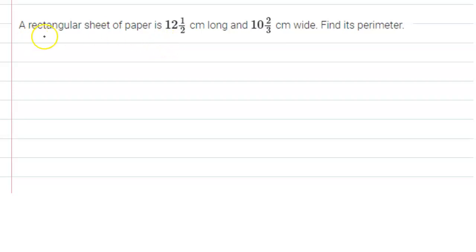Hello everyone. The given question is: a rectangular sheet of paper is 12 1/2 centimeters long and 10 2/3 centimeters wide. Find its perimeter. So here we have a rectangular sheet whose length and breadth are given to us. Let us solve this question.